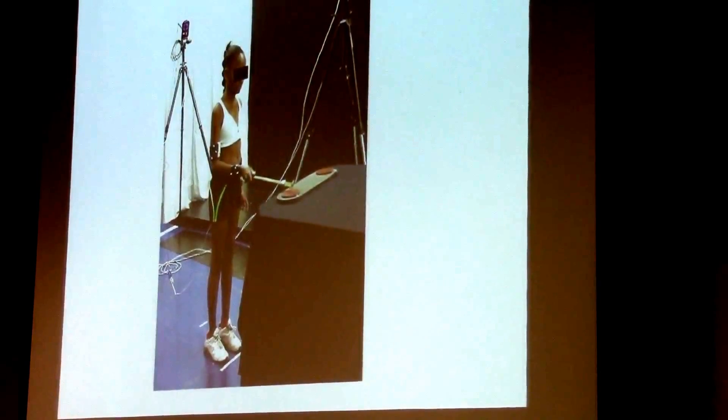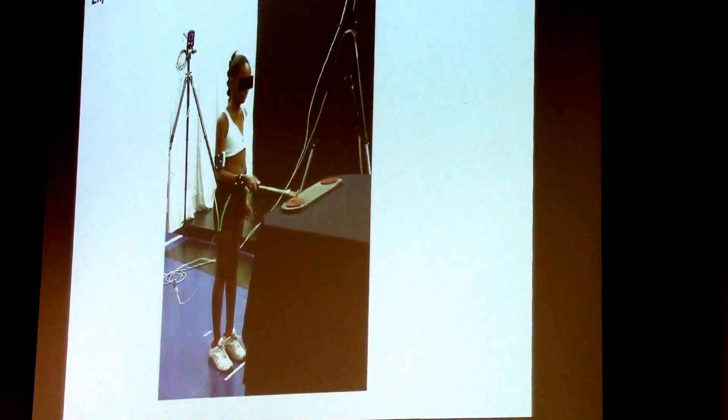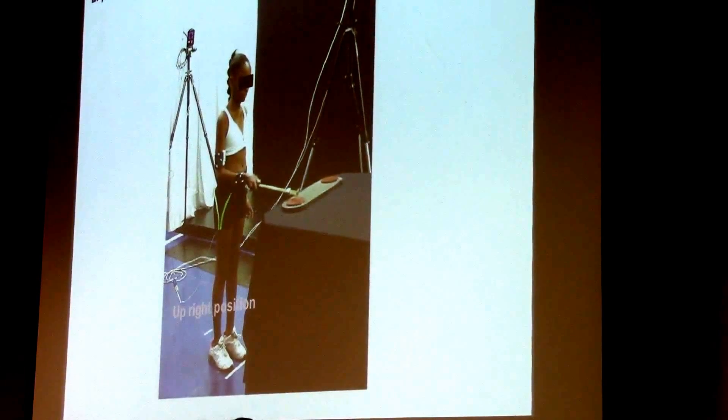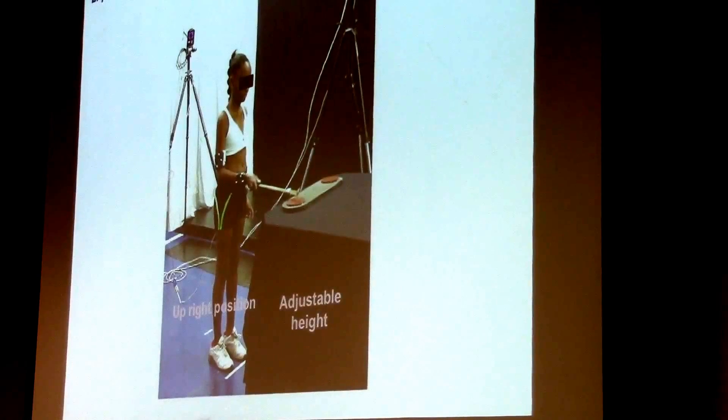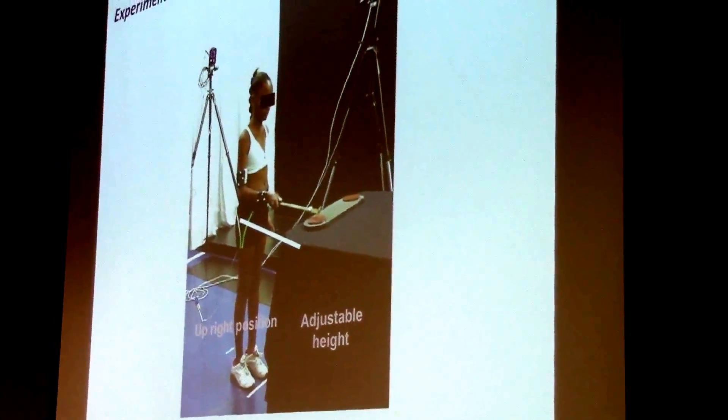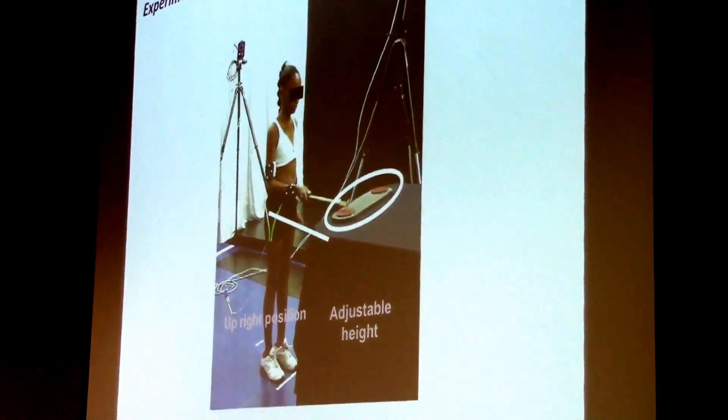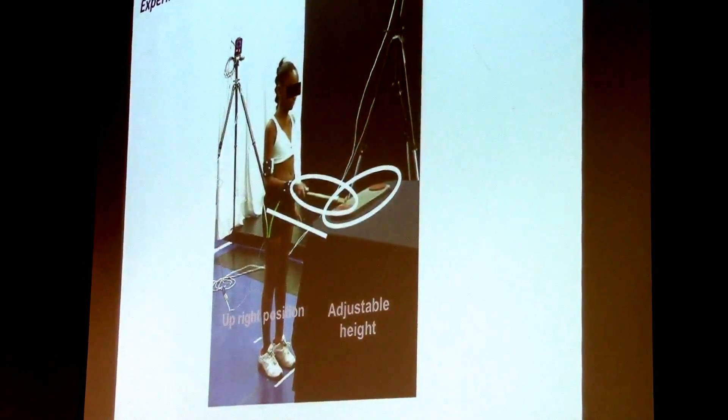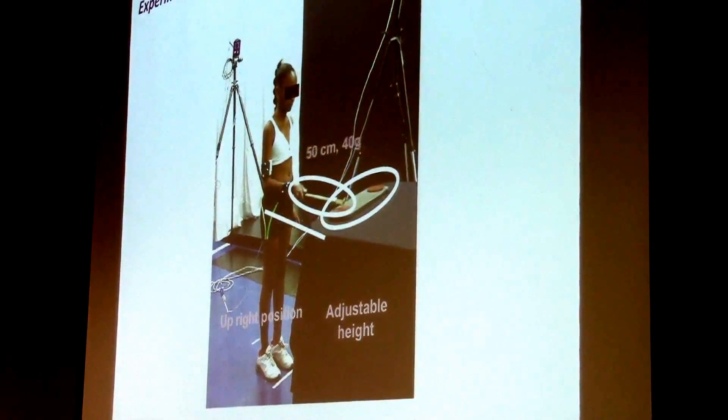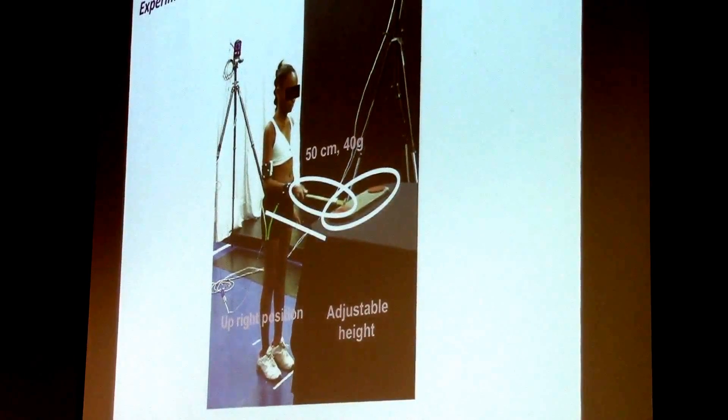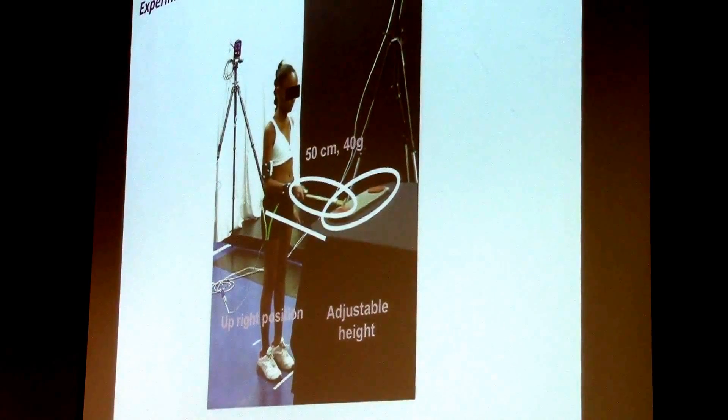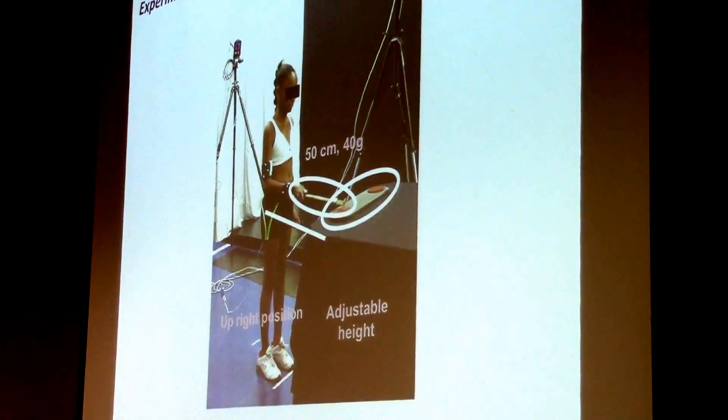Participants stood in front of a table in the upright position. The table had adjustable height, so it was aligned with the pelvis of the participants. Targets were positioned on this table. And participants used a rod that was about 50 centimeters long and 40 grams of weight to touch the targets back and forth.